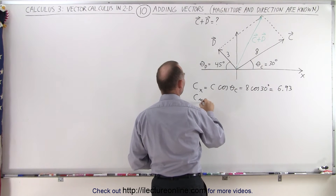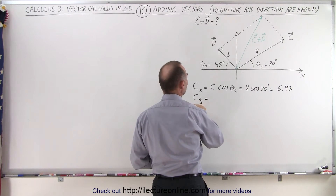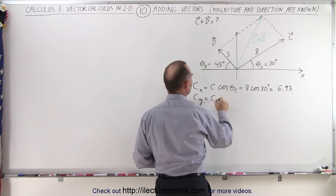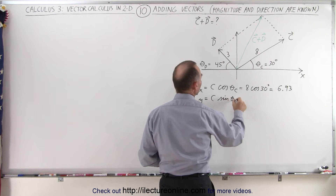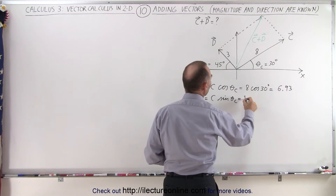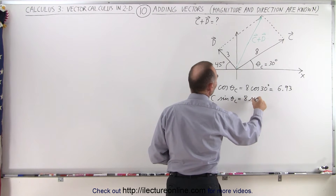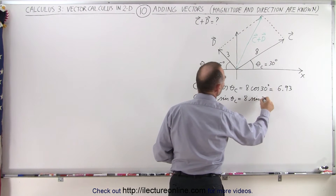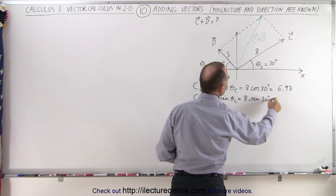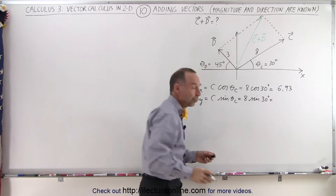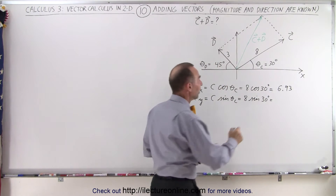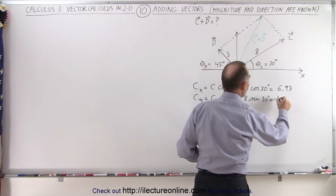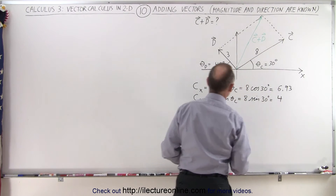C sub y, the y component of C, is equal to C times the sine of theta sub C, which is 8 times the sine of 30 degrees. The sine of 30 degrees is one half, so one half times 8 gives a magnitude of 4.